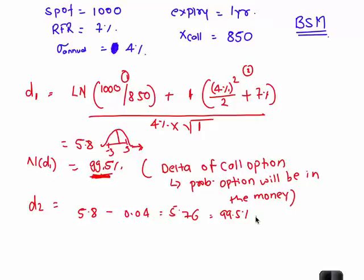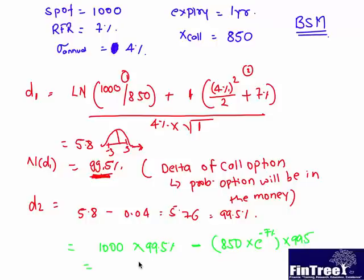Now once you have d1 and d2, then we can calculate value of call option. So first spot, spot is 1000, spot is multiplied with N(d1), so that is 99.5%, minus present value of 850, so 850 multiplied with e raised to minus 7%. And then once you have the bond, this again we will multiply with 99.5. So value of option would be more than 150. So value of the call option using the Black and Scholes model is coming out to be 206.